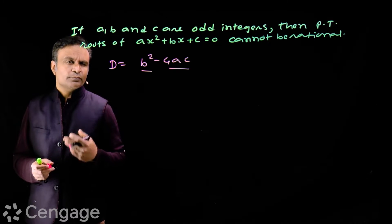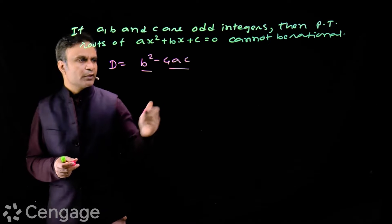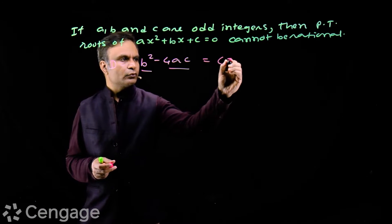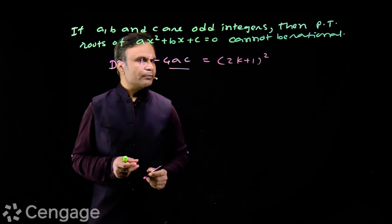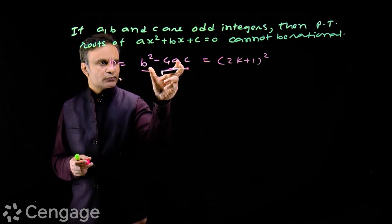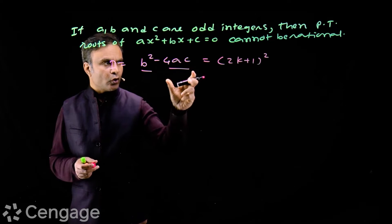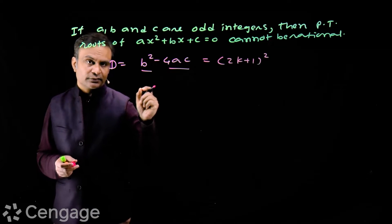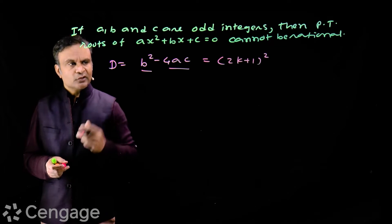So if we assume discriminant to be perfect square of some integer, that integer would be an odd integer. So we write this is equal to square of 2k+1, because this would be a square of odd integer. Now b is also an odd integer.